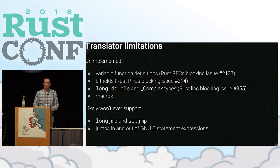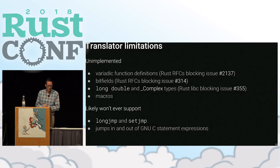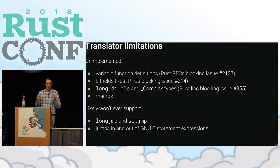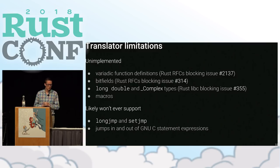There are a couple of things we can't transpile today. The one we run into the most is lack of support for variadic function definitions. We can call variadic functions that are external in C code — so we can call printf, for instance — but there's still a blocking issue on having Rust function definitions with a variadic argument list. Bitfields is also something we're blocked on, but there's a Rust RFC for that, so if it ever gets implemented in Rust, we can translate it.